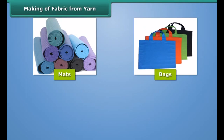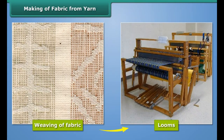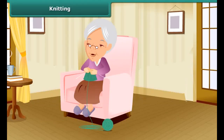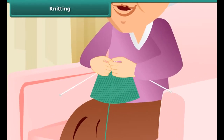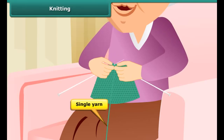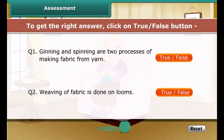Making of fabric from yarn: Fabric is made by weaving and knitting the yarns. See these mats or bags — they are made by weaving yarns. Weaving of fabric is done on looms, which are of two types: hand-operated looms and power-operated looms. You can also make a mat with a few thin ropes — weave yellow and blue strips one by one. Similarly, two sets of yarn are woven together to make a fabric.